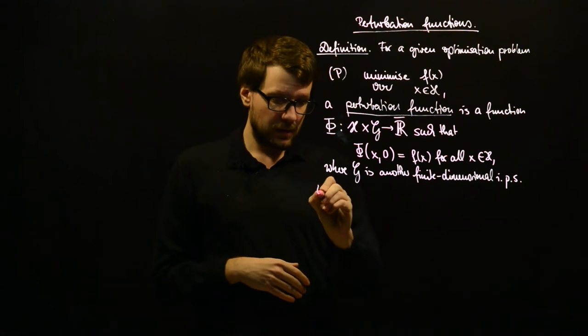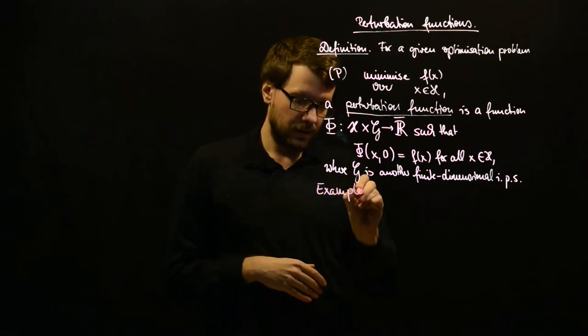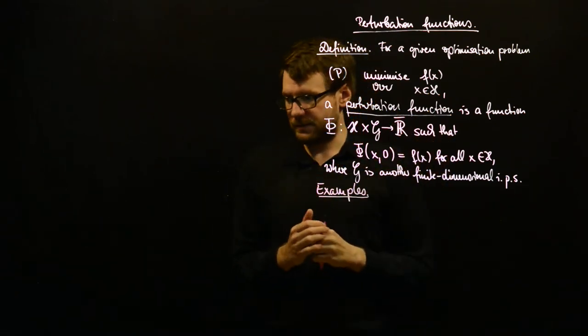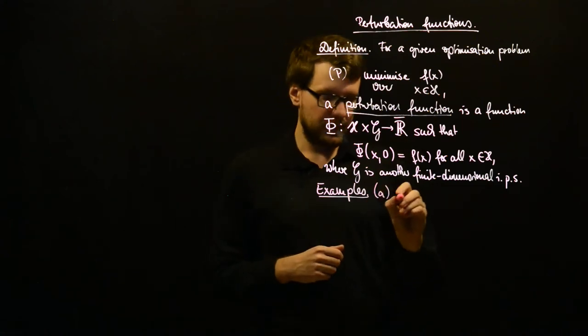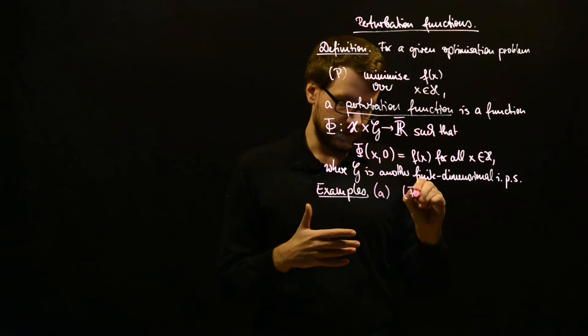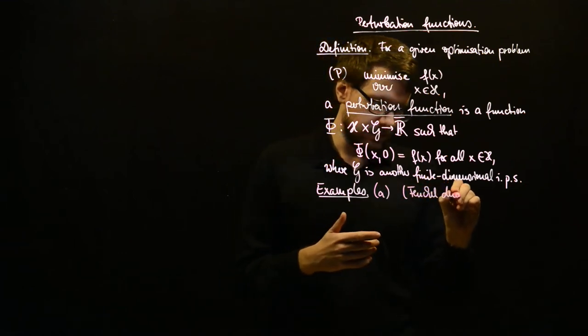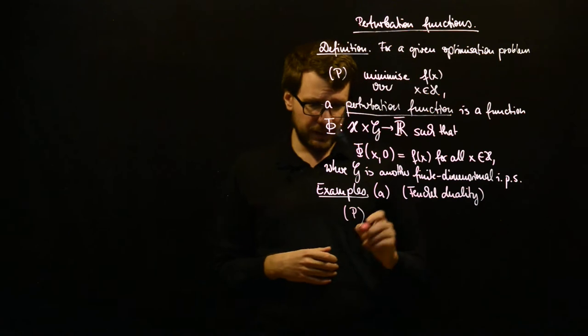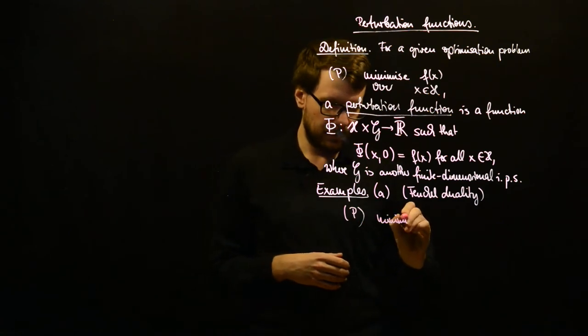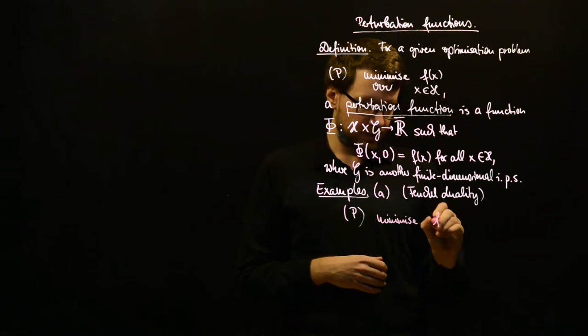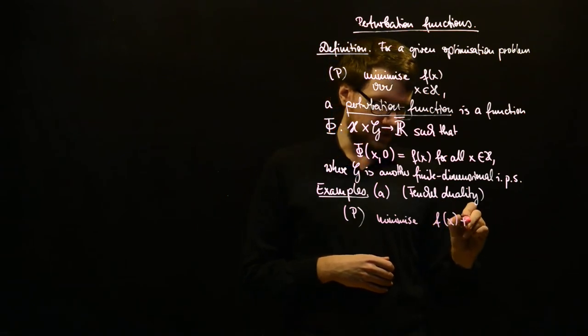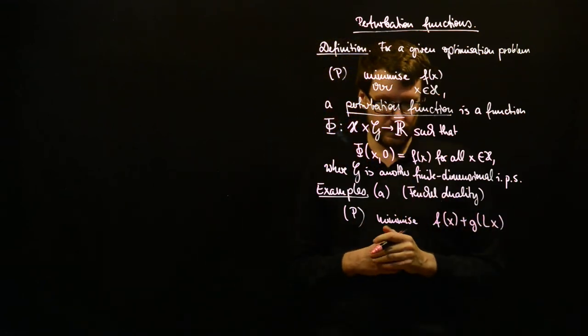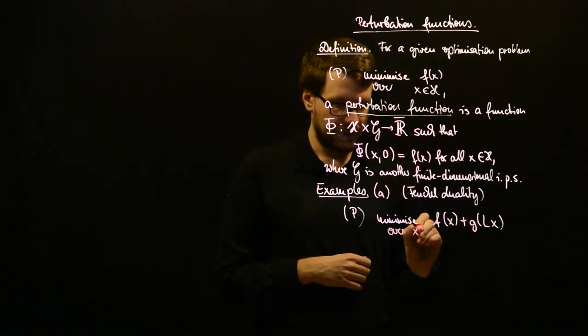And as I promised, in these examples, the perturbation function will be related to the structure of these problems. So, example A will ultimately lead to Fenchel duality. So, we start with this primal problem, and we want to minimize, actually, a sum of two functions, f of x plus g composed with L. So, we have g of Lx, over x in H.